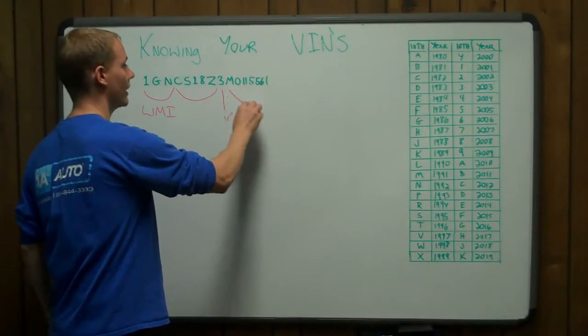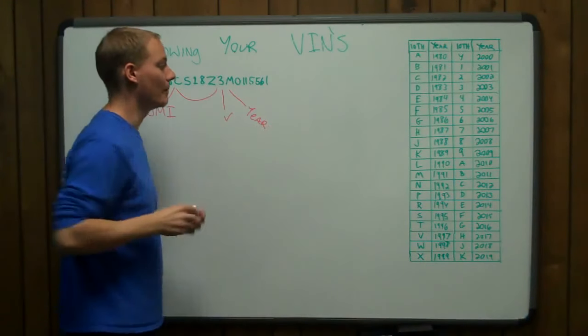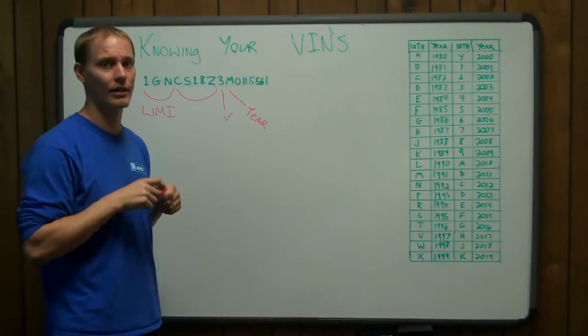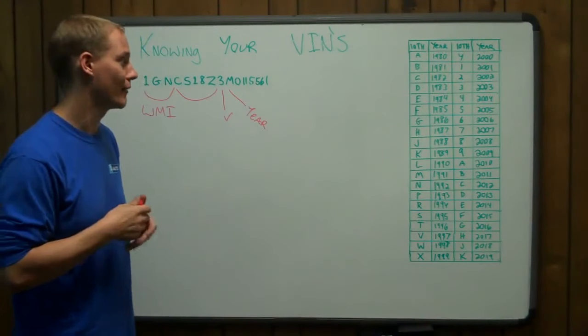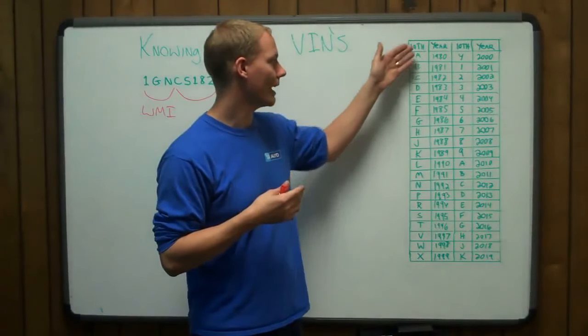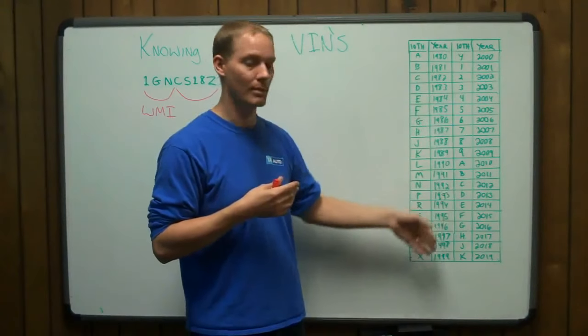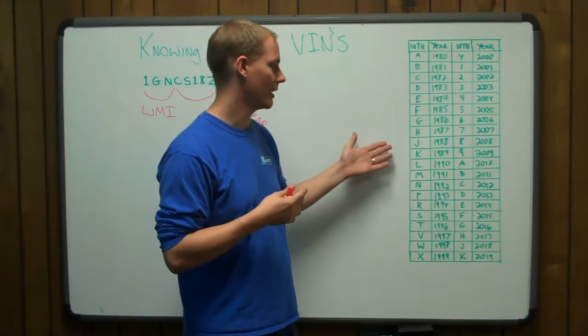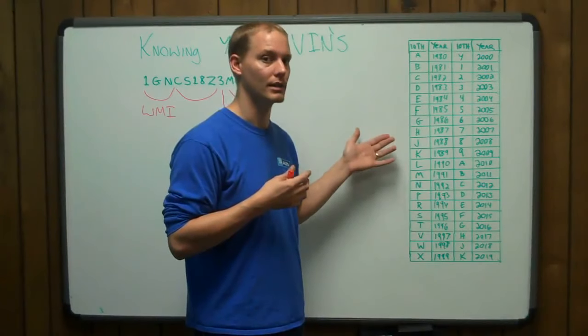The tenth digit, right here, is the year, which is amazingly helpful if you're in a junkyard or showing off to your friends or something like that. You can figure out how the years match up to which letters and which numbers by this simple handy-dandy chart. And you'll always know what year the vehicle is.